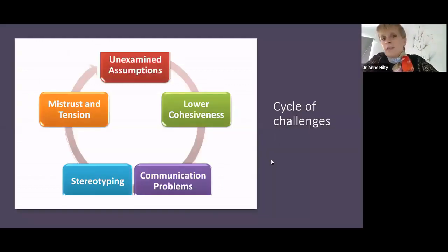So the cycle of challenges looks like this. We start at the top in red. We have unexamined assumptions about the other culture. We don't even know we have them, but we have certain assumptions, certain things we think we know, certain beliefs. That brings to us a lower cohesiveness. We feel less in common with them based on those assumptions. We feel less connected to them. Some of those assumptions may be of similarity, but a lot of times it's about things we find different from our own culture. That's just naturally where the human brain goes. That lowers the cohesiveness between us, which then in turn creates communication problems and can also lead to stereotyping. All Chinese are this, all Brazilians think like that. Which increases mistrust and tension, and then adds to our unexamined assumptions, our unconscious assumptions. So this is a cycle of challenges when it comes to cross-cultural understanding.